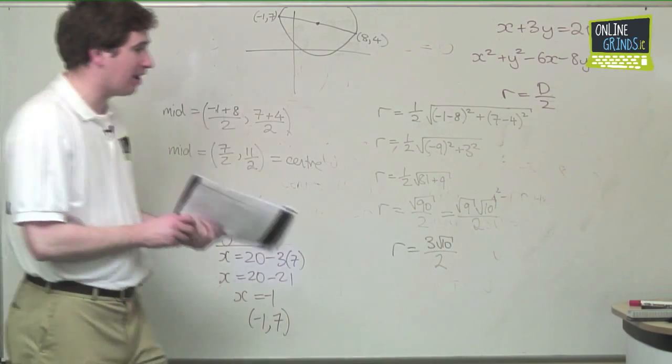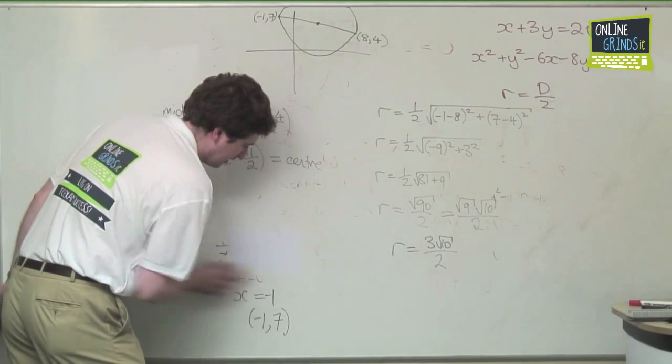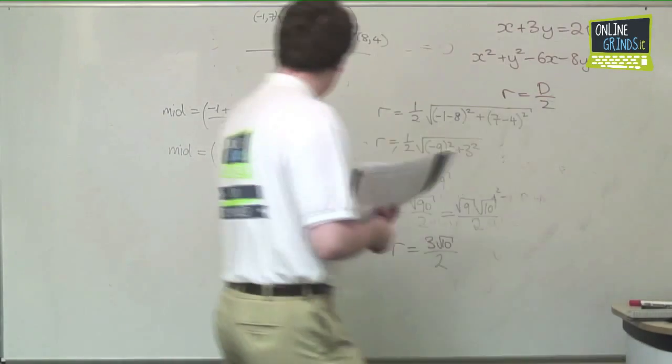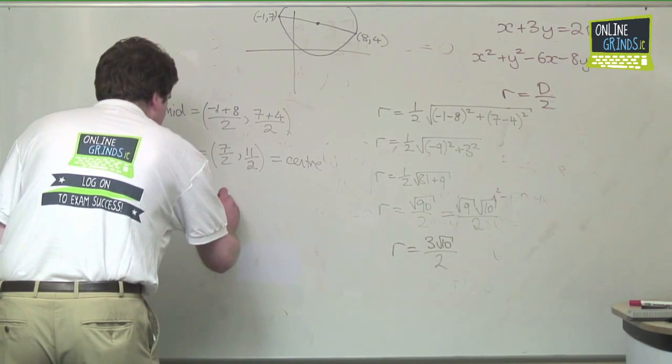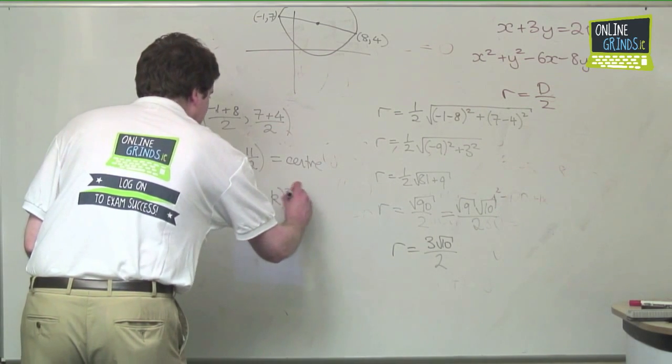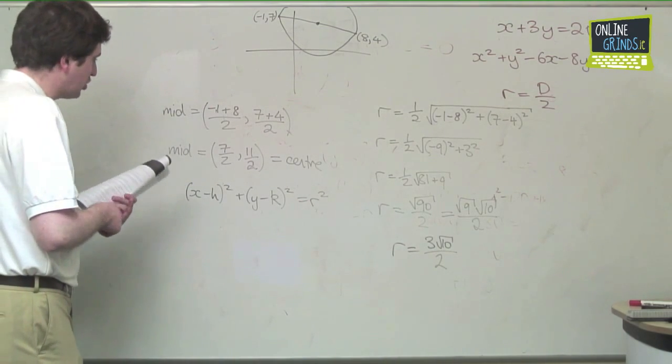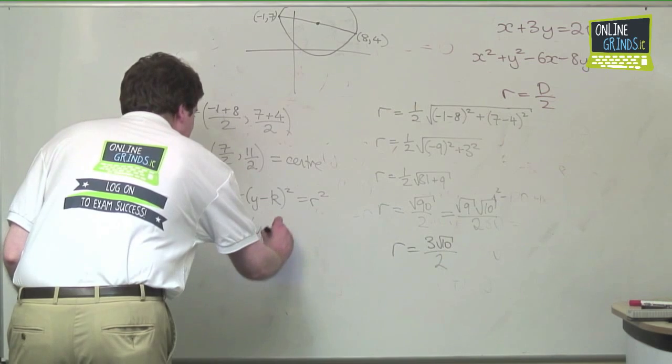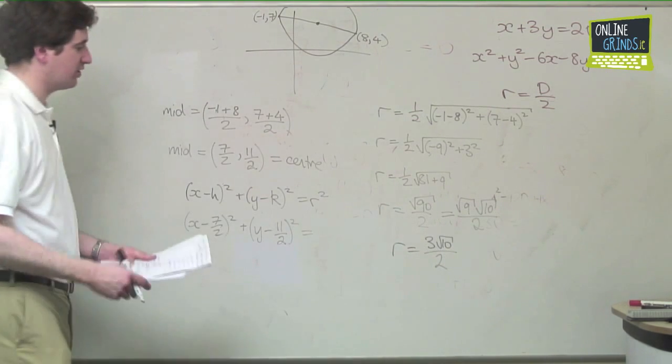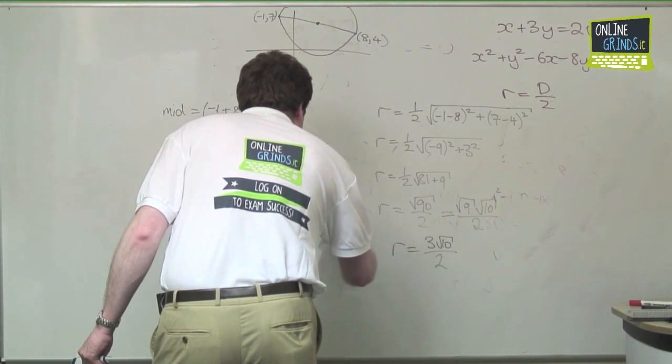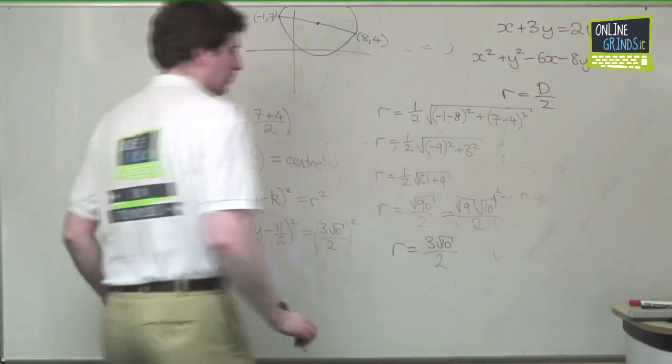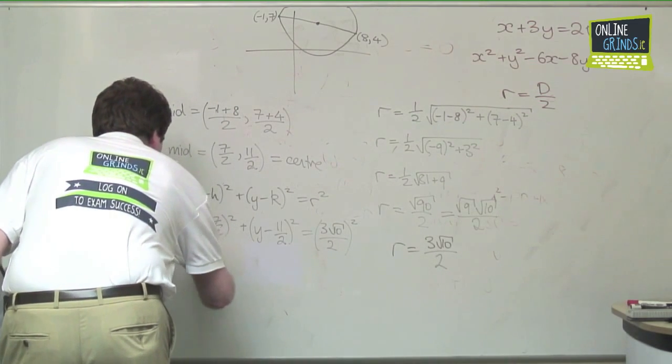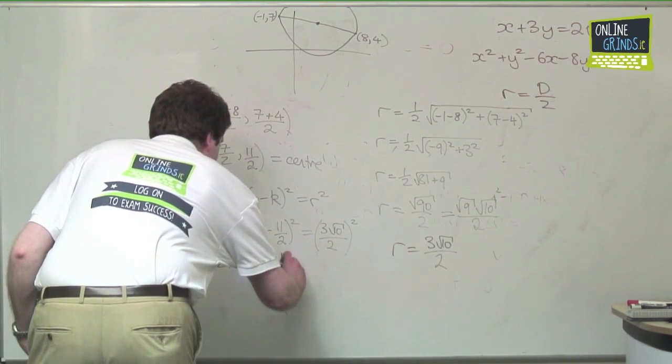And now we are ready to apply our formula. x minus h all squared plus y minus k all squared equals the radius squared. So we're ready to go. x minus h all squared plus y minus k all squared is equal to r squared. So h is 7 over 2, k is 11 over 2.